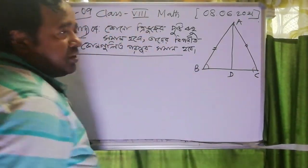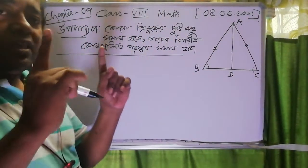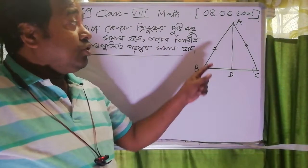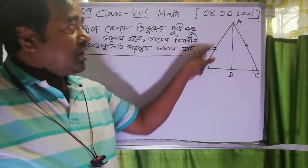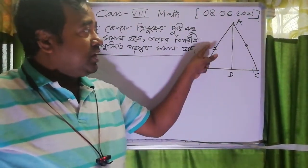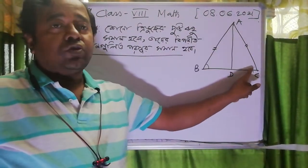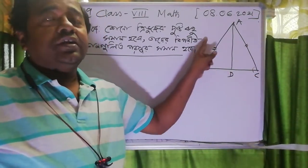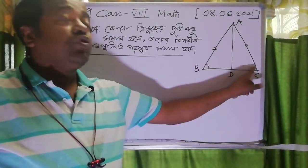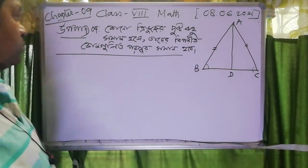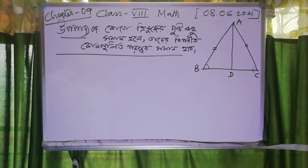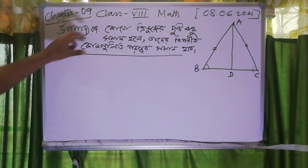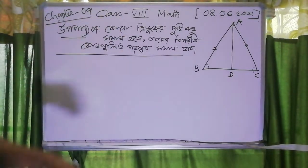The example process of a product — each product is a good source of resources and there is no one with the same material because these materials are good. If you need the product of a product, you will probably ask if there is a product called a product.